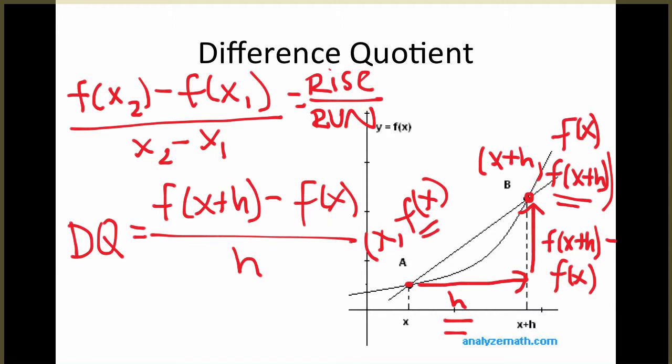Now, let's take a look at an example of how you can actually apply this to an equation. So the first equation we're going to look at is a basic linear function: f of x equals 5x minus 6. And we're just going to find the difference quotient for this.